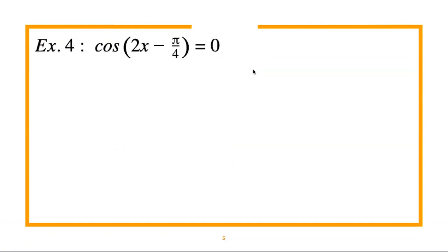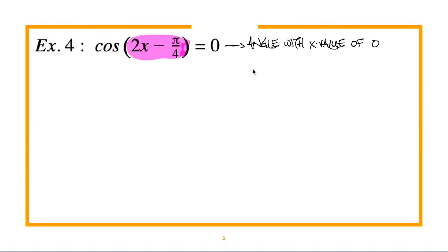Example four involves cosine of (2x − π/4). The expression inside is more complex, but the approach doesn't change — we're still finding an angle with a cosine value of 0, meaning an x value of 0 on the unit circle. Let a = 2x − π/4, so we have cosine(a) = 0.